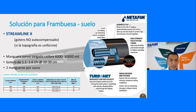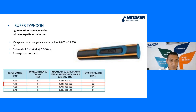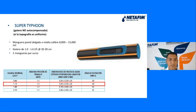Un dato técnico: el caudal nominal de un gotero de 1.1 L/h tiene un área de filtrado de 15 mm² y su caudal a máxima presión es de 0.91 L/h. Otra solución para frambuesa es el Pertaifun, también gotero no autocompensado de manguera de pared delgada a media — un poco más gruesa — con goteros de 1 a 1.6 L/h y el mismo espaciamiento.